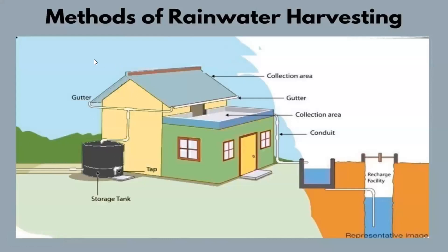Here we see the methods of rainwater harvesting. In this system, water from the collection area flows through channels to a storage tank. It can also be sent directly underground to recharge wells.